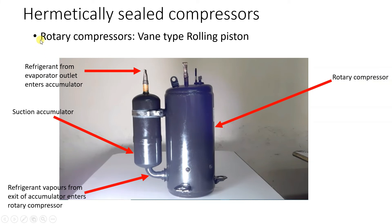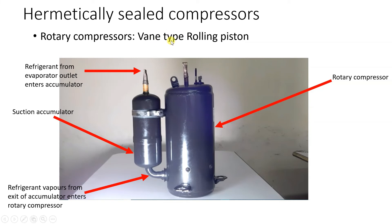Next is a hermetically sealed rotary compressor. Inside the shell we have a compressor and motor. There are two types: fixed vane or blade type (rolling piston rotary compressor) and sliding vane rotary compressor.